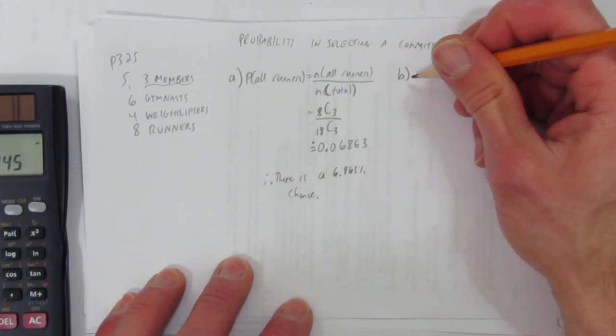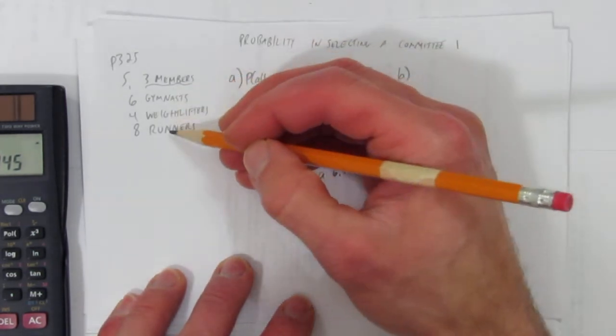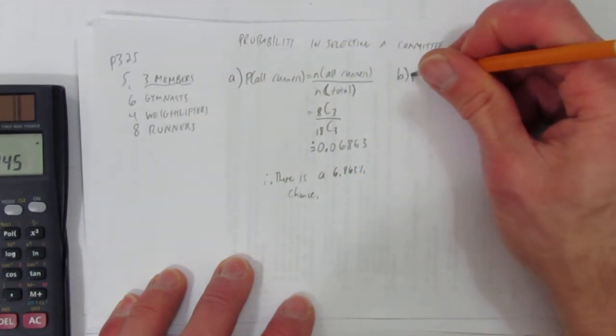How about part B? Part B says, the committee is represented by the three types of athletes. We have three types of athletes, so what's the chance you get one of each?